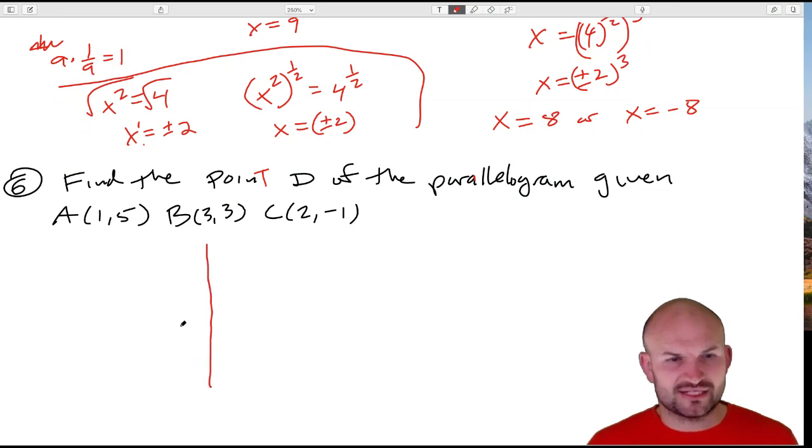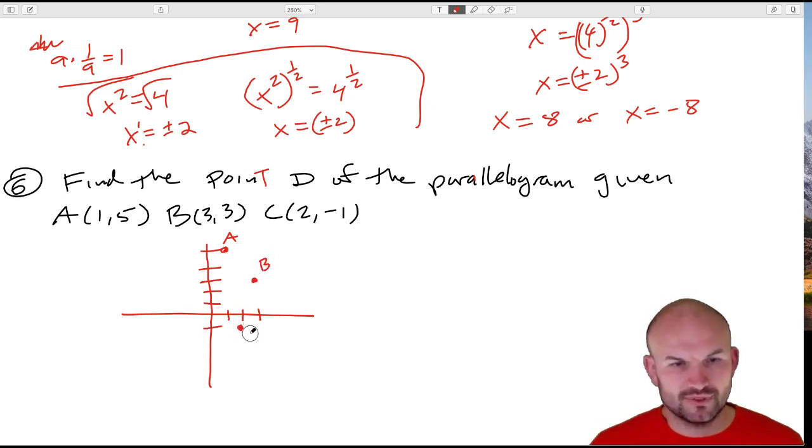So first thing, what I tell students when I taught geometry is just plot the points. So we have over one, up five - one, two, three, four, five. And then label the points. Three, so one, two, three; one, two, three. And then we have C, which is over two, down one. Okay.